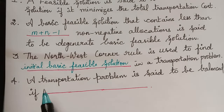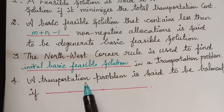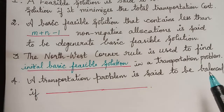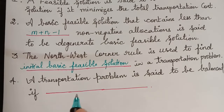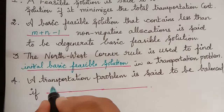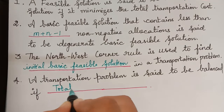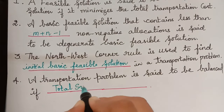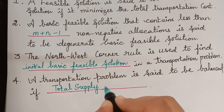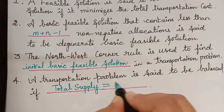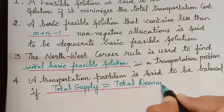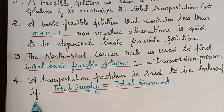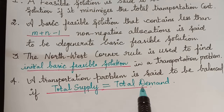The next question is: a transportation problem is said to be balanced if dash. In a transportation problem, if the total supply is equal to the total demand, then the problem is said to be a balanced transportation problem.